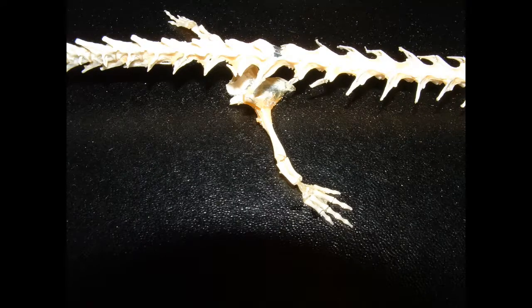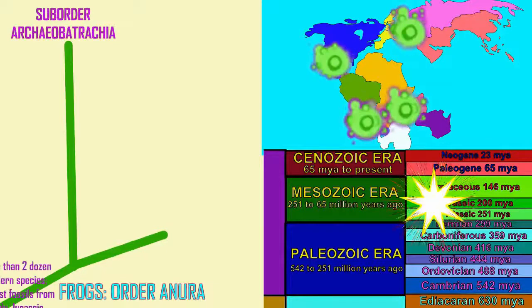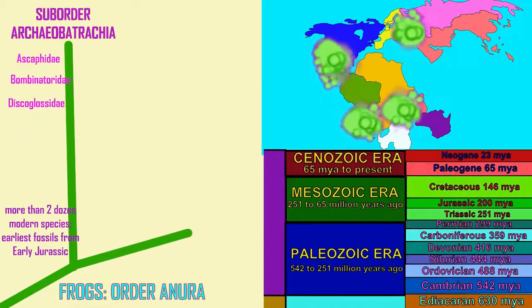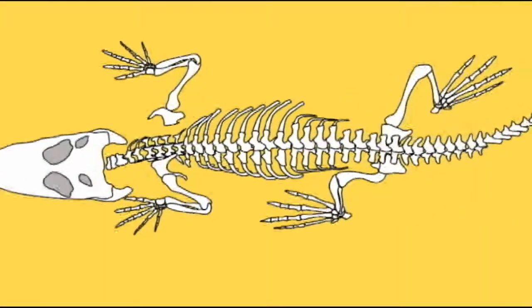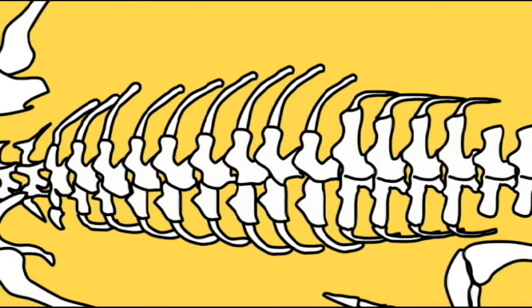Early amphibians varied in the size of their ribs, but in many lineages they were small, as they are in salamanders today and in frogs. In the most primitive frogs alive today, the ribs are not fused to the vertebrae, but in the majority of frogs they have fused to form single structures. A number of fossil amphibians and ancestral amniotes possessed lengthened ribs.